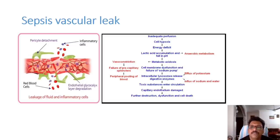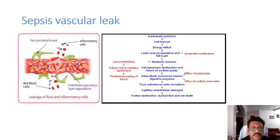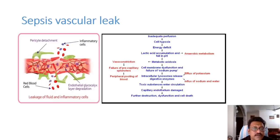The chart shows: inadequate perfusion leads to cell hypoxemia, energy deficit, lactic acid accumulation, metabolic acidosis, cell membrane dysfunction, and failure of the sodium pump. Intracellular lysosomes then release digestive enzymes; toxic substances enter the circulation and damage the capillary endothelium. When the capillary endothelium is damaged, small openings in blood vessels produce vascular leak. This causes the intravascular volume to be depleted through these vascular pores, shifting fluid outside the intravascular compartment.